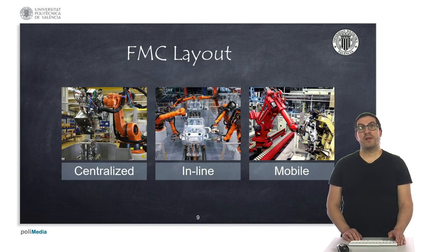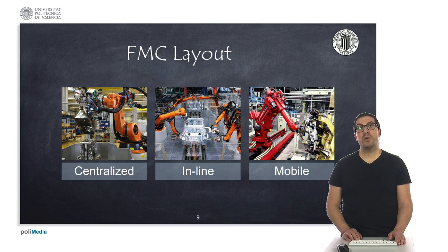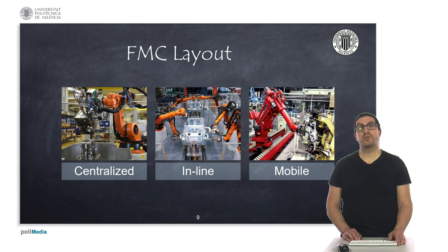There are different layouts of flexible manufacturing cells concerning robots: centralized, inline, or mobile. In the centralized layout, the robot is the main element of the cell, with all necessary equipment arranged around it in a circle or semicircle. In the inline layout, a conveyor belt carries the product and the robot or robots perform operations on the sides of the conveyor belt. In a mobile distribution, the robot can move either freely or using a conveyor belt, and is usually part of manufacturing cells with a larger workspace, able to transport parts from one machine to another within the same manufacturing cell.